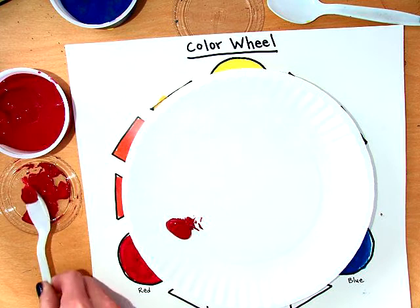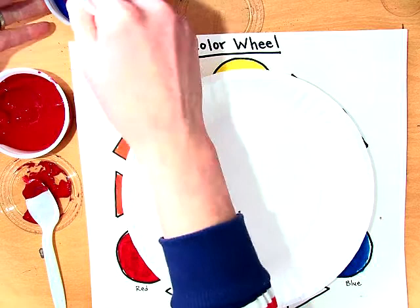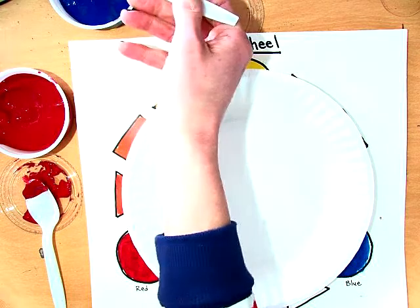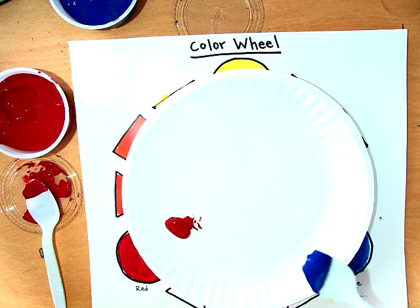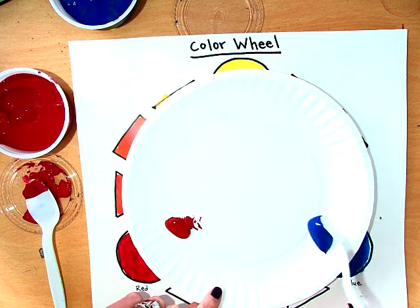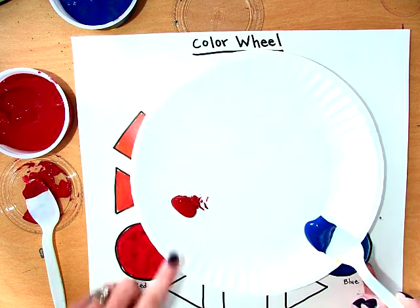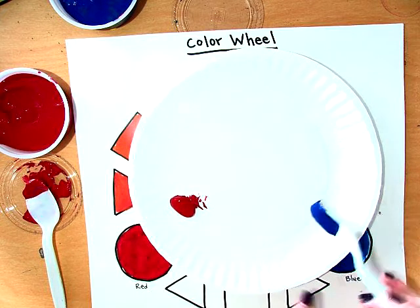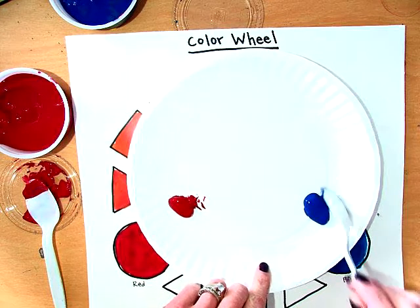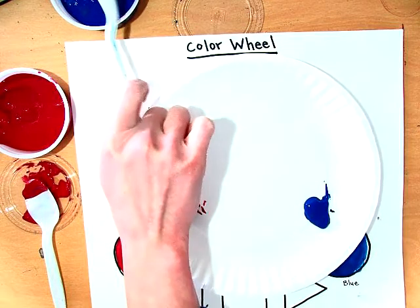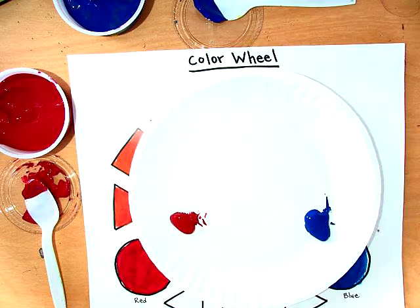I also need blue today because I'm making my violet, my red violet, and blue violet. On the plate I like to put them about where they're at on the color wheel. You can see I put my red down here and I'm going to put my blue over here. When I'm done I'm going to tap off any excess back into the container and then set the blue right there.